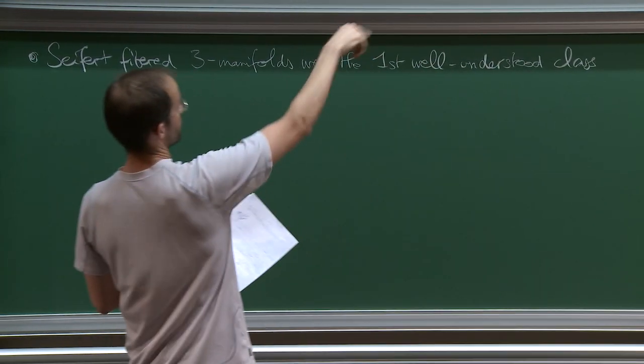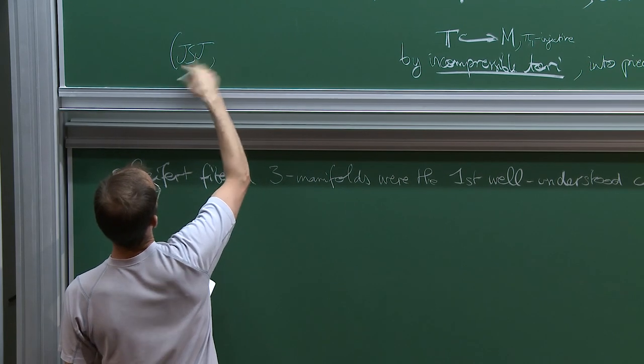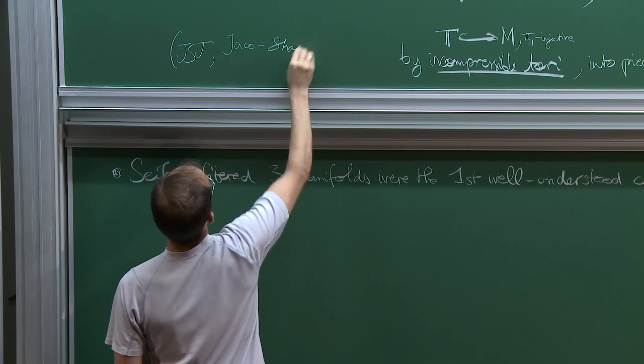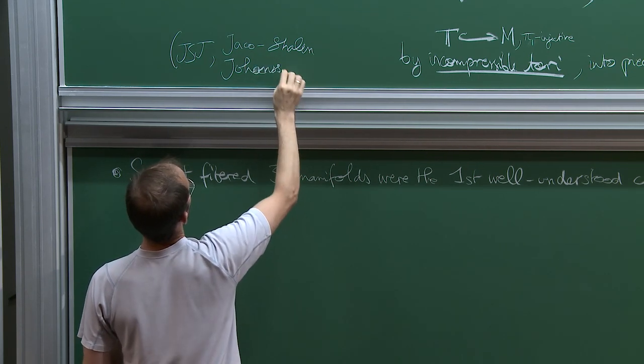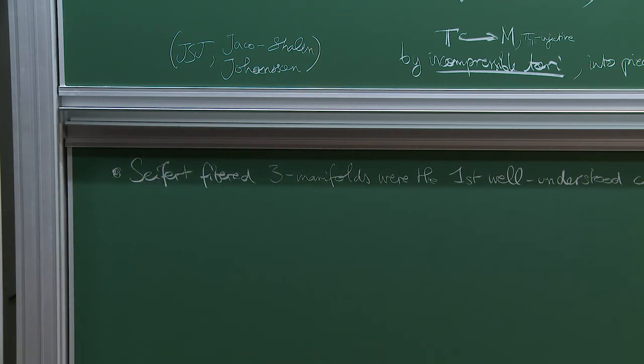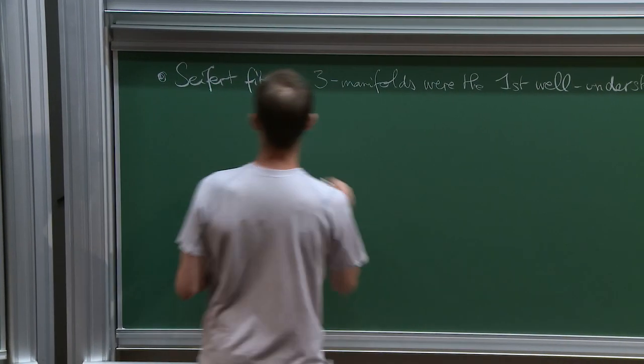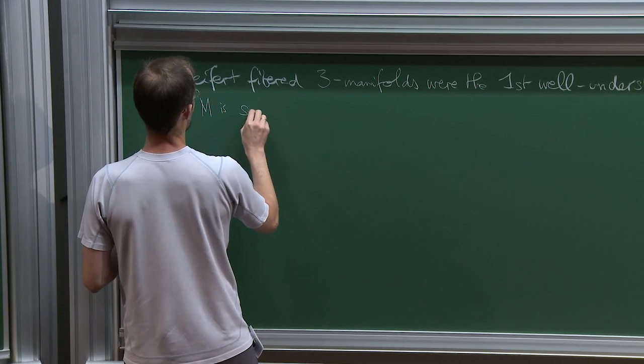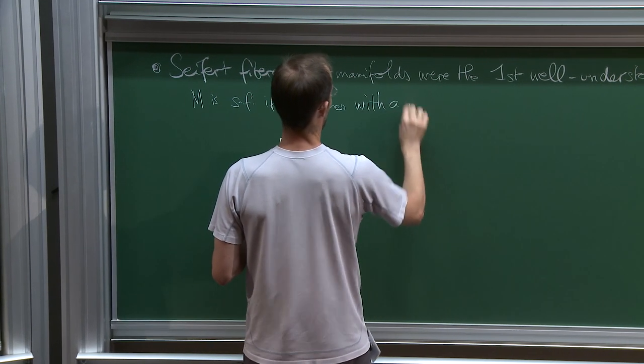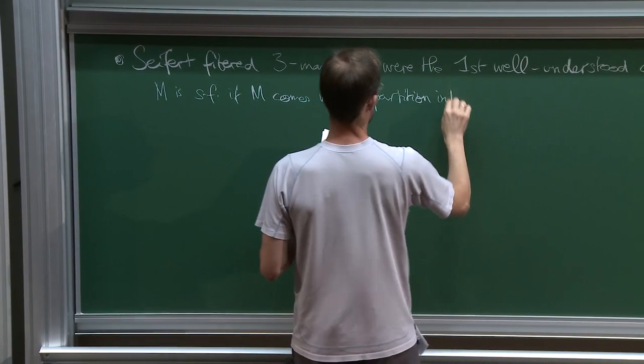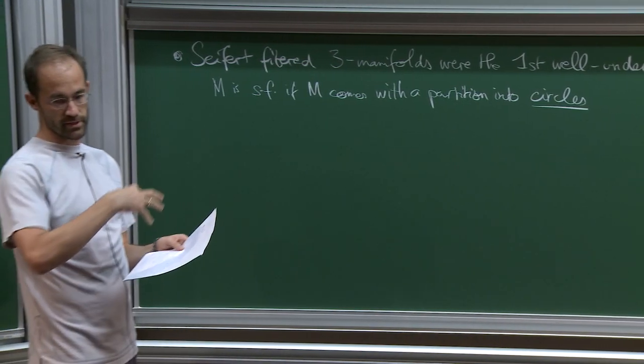Oh, and by the way, this second statement about tori is due to JSJ. That's a very common way of calling it. Jaco, Shalen and independently Johansson. I think it's 1NSS but don't trust me. Okay, so the Seifert-fibered manifolds are the ones that are Seifert-fibered if M comes with a partition into circles such that all but finitely many of these circles lie at the center of a solid torus.